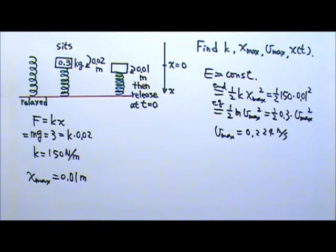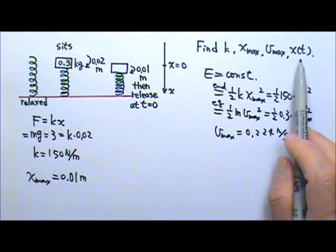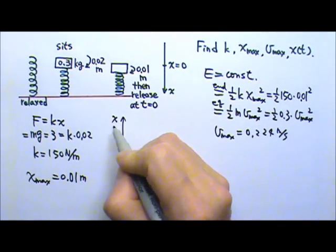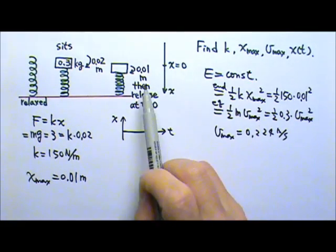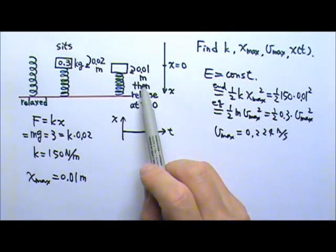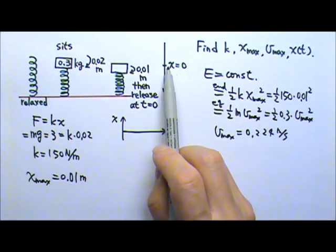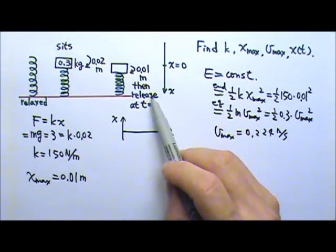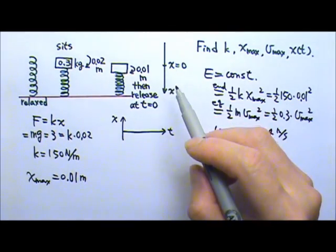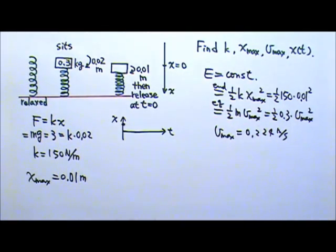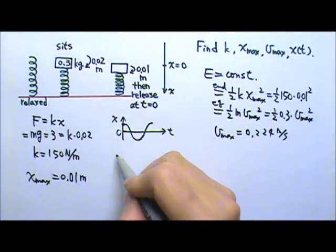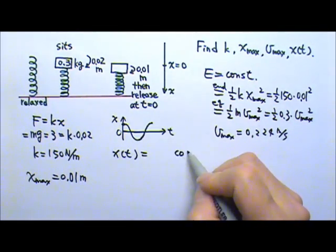Now let's find the position as a function of time. The position should be either a sine or cosine function. At t equals 0, the box is released from 0.01 meters below the equilibrium, and since the equilibrium is x equals 0, the position at t equals 0 is positive 0.01. Since it starts at the maximum displacement, it must be a cosine function. So the position as a function of time will be a cosine, and the coefficient in front is the amplitude, 0.01 meters.